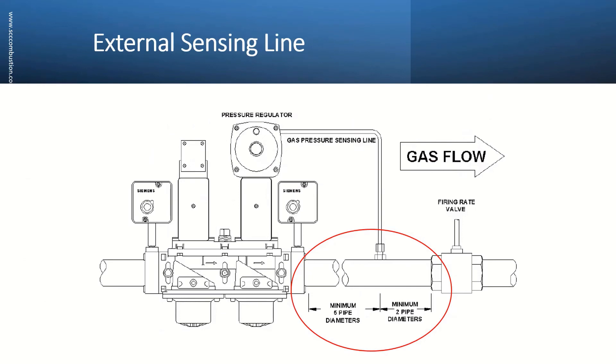The SKP25 requires an external gas pressure sensing line into the pipe downstream of the shutoff valve. We recommend 5 pipe diameters of straight run upstream of the sensing point and 2 diameters straight run downstream for a clean pressure sensing. We also recommend keeping the velocity downstream of the shutoff valve less than 120 feet per second. Usually the pipe size downstream of the shutoff valve is increased.